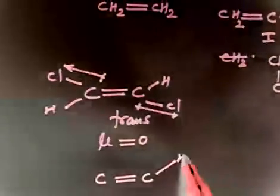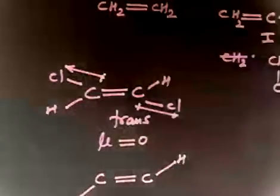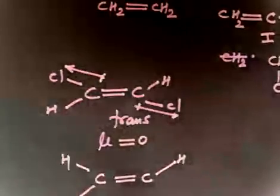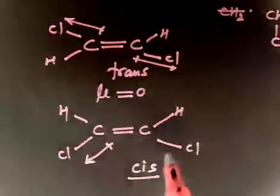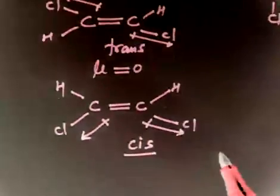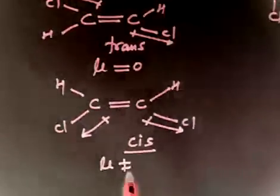Now next we have C double bond C at this side. But now hydrogen, both hydrogen on the same side. CL, CL. And now this is cis. In this case you will have some dipole moment. Because dipole moment does not cancel. So mu is not zero.